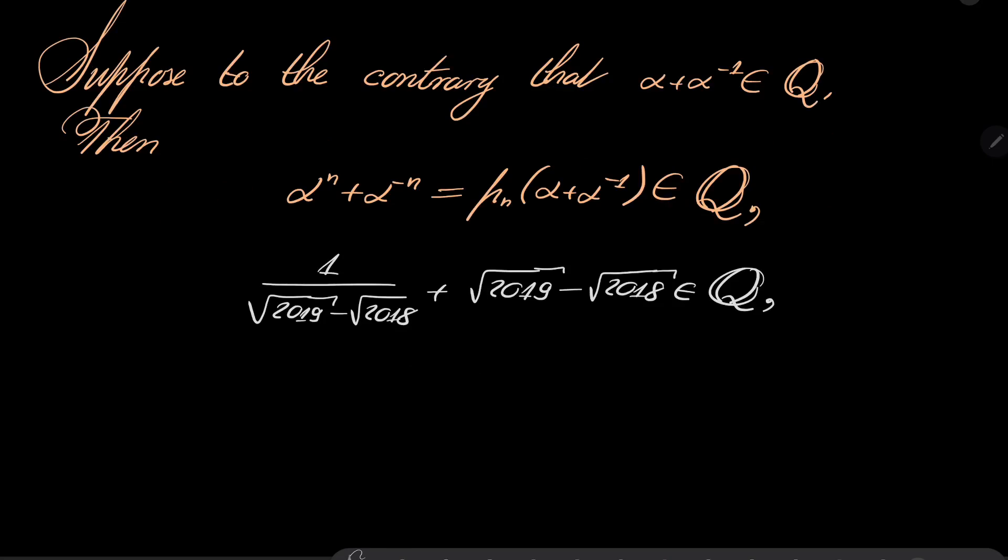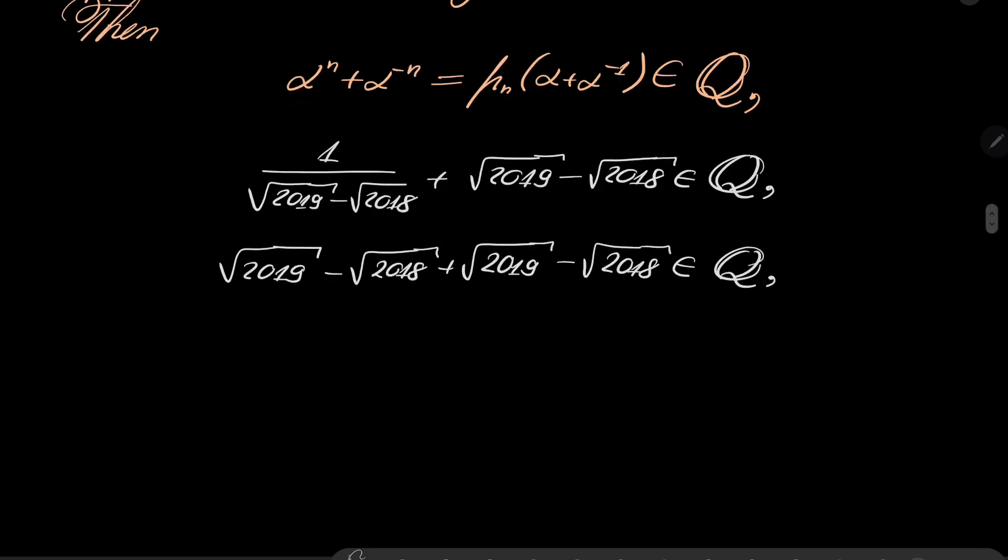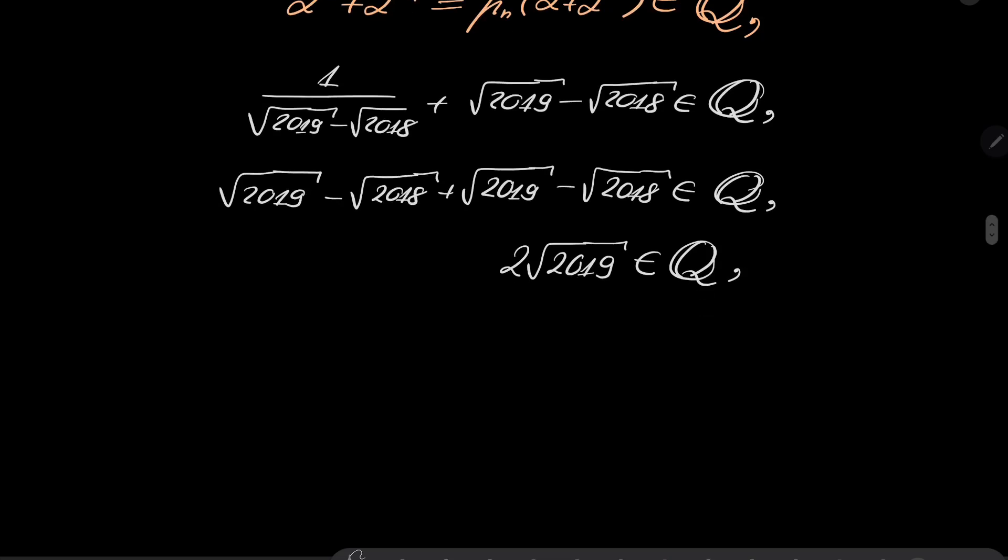Now, we will go back. This fraction can be written as 2019 minus √2018 plus √2019 minus √2018 is rational. All right, but now this means that 2 times √2019 is rational, so it means that √2019 should be rational.